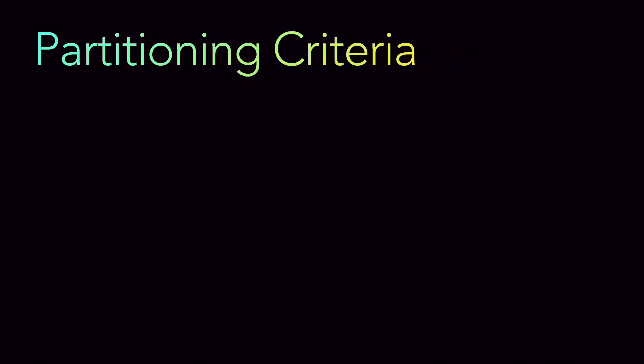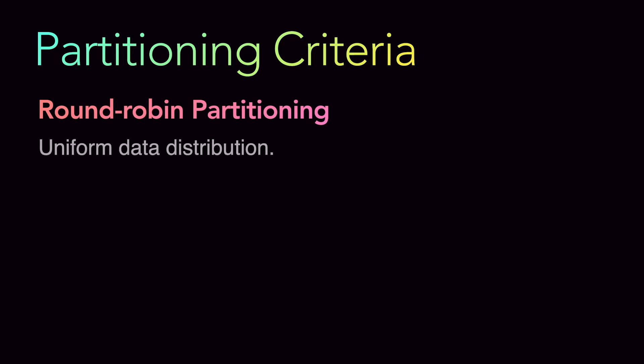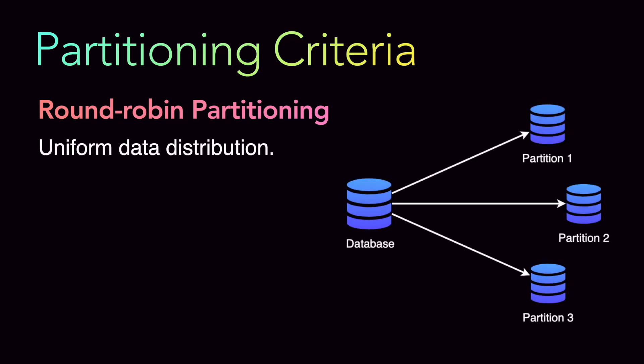Now let's look at the partitioning criteria. The first criteria is round robin partitioning, which gives a uniform data distribution. If we have partitions one, two, and three, the data goes to partition one first, then partition two, then partition three, then back to partition one, and so on — in a round robin fashion. It distributes data equally across all partitions, and when the last partition is reached, it starts again from the beginning.